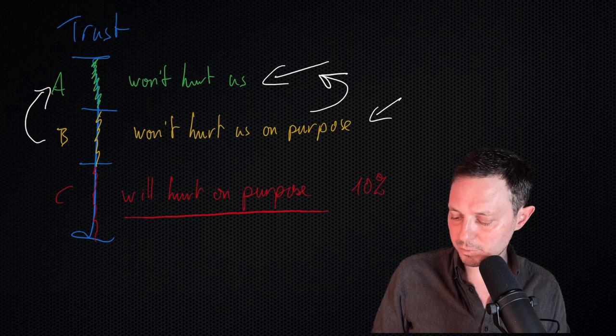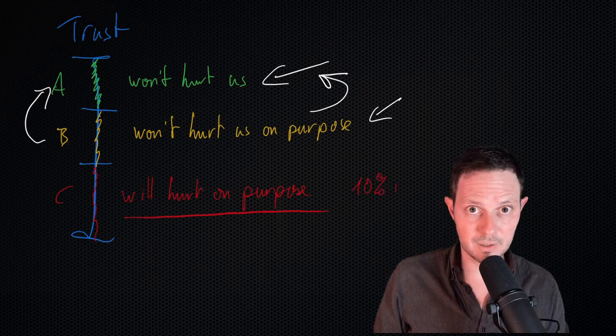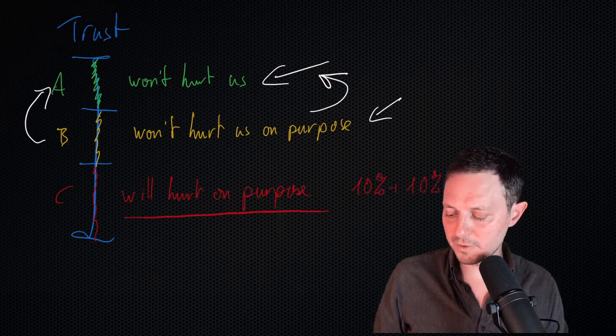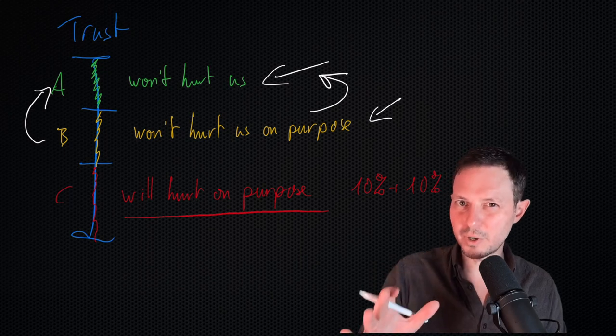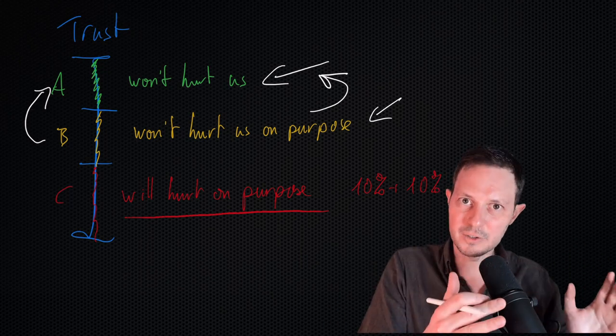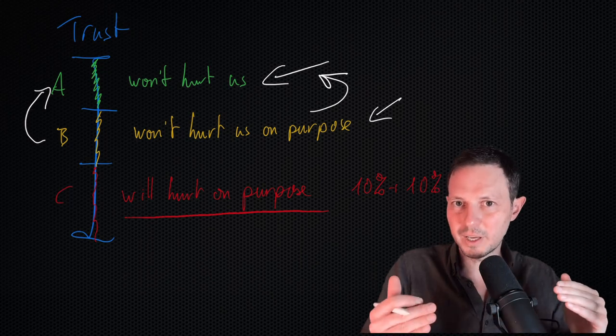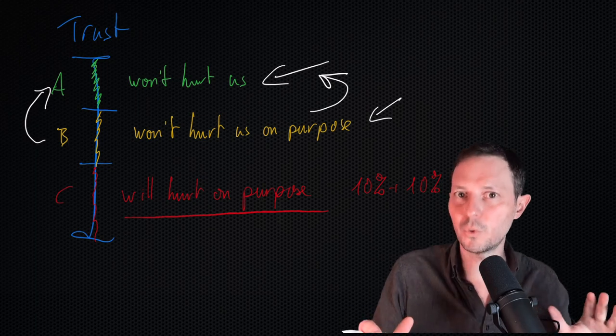About 10% of the population are considered Cluster B. And probably another 10% have some toxic traits, not quite diagnosed Cluster B, but they've got similar enough behaviors for them to be rather awful people.